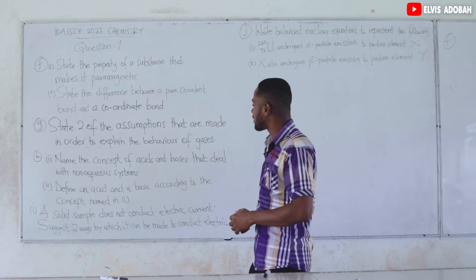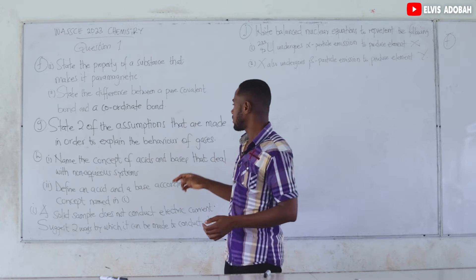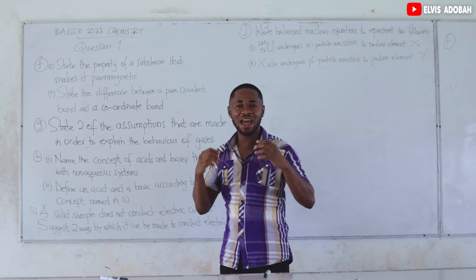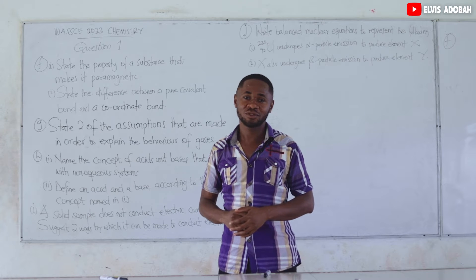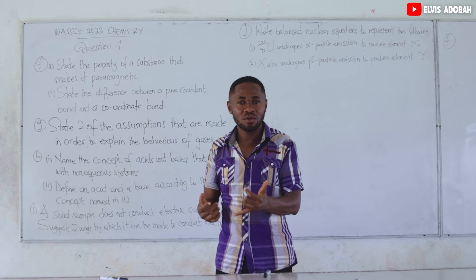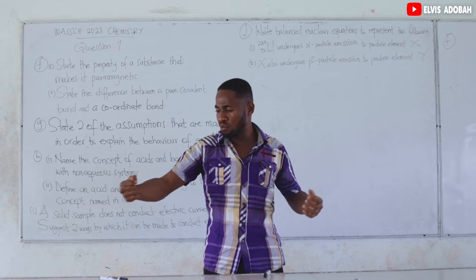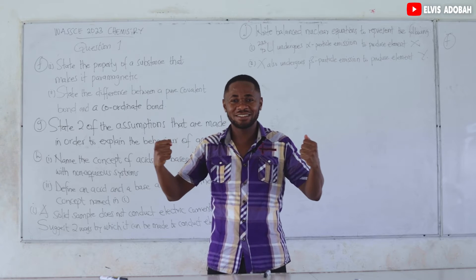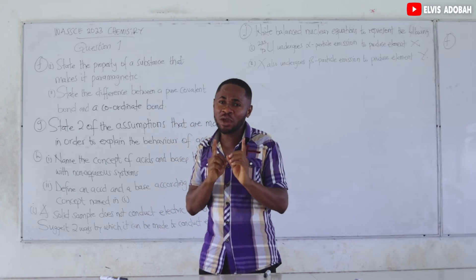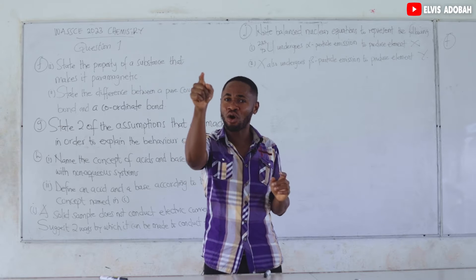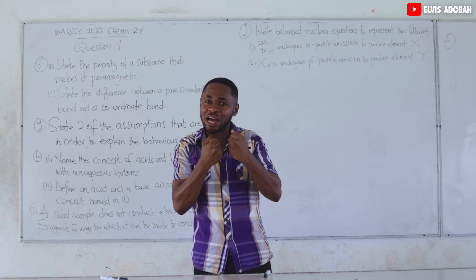Question 1G: state two of the assumptions made to explain the behavior of gases — the kinetic theory of gases. First, gases are made up of particles or molecules that are constantly moving randomly. As the molecules move, they hit each other, and that collision between gas molecules is perfectly elastic — just like throwing a cushion ball at the wall: it hits and comes back with the same speed.